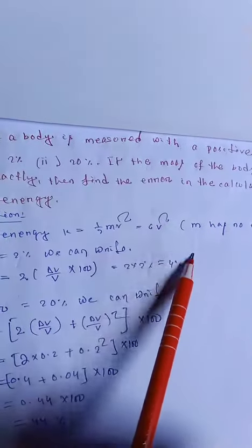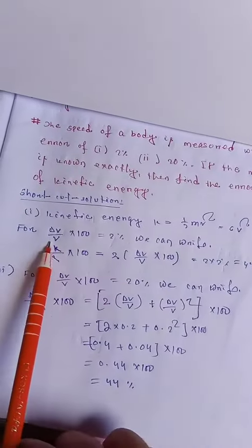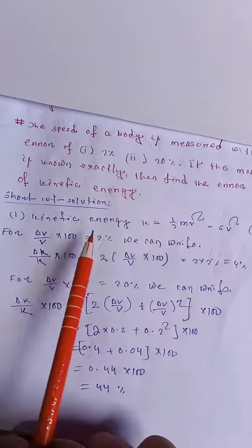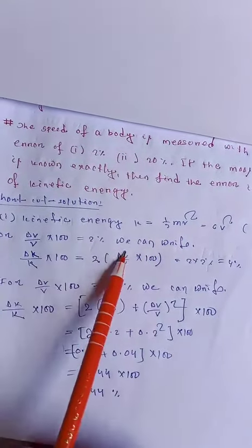C is constant, so half m is constant since m has no error. Given that del v by v times 100% equals 2% error in speed.